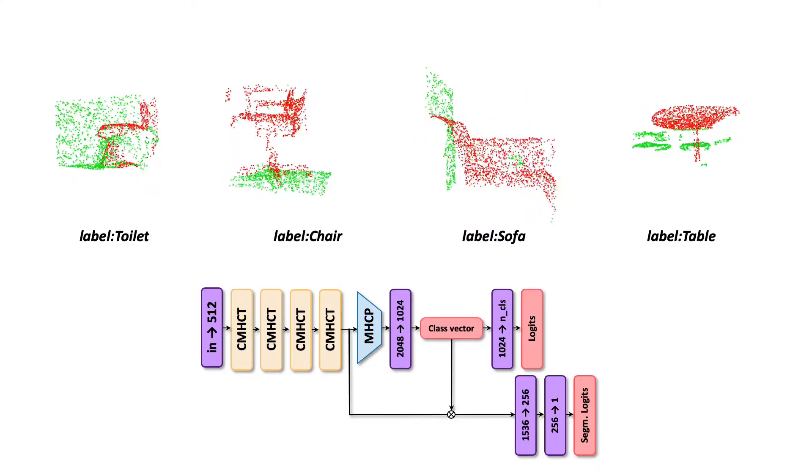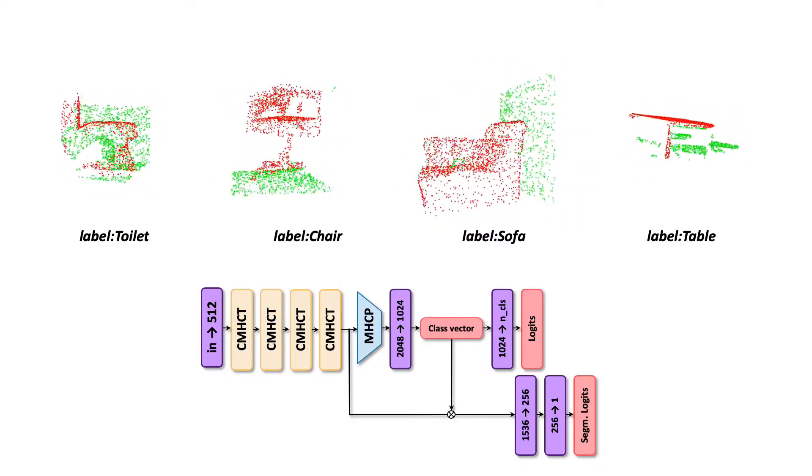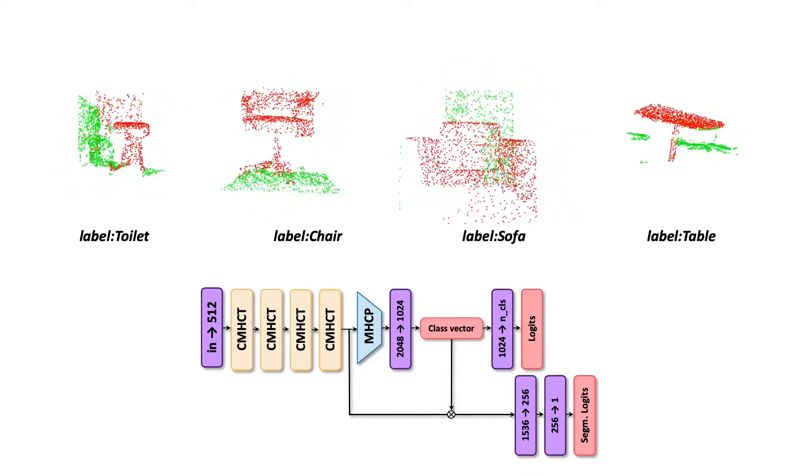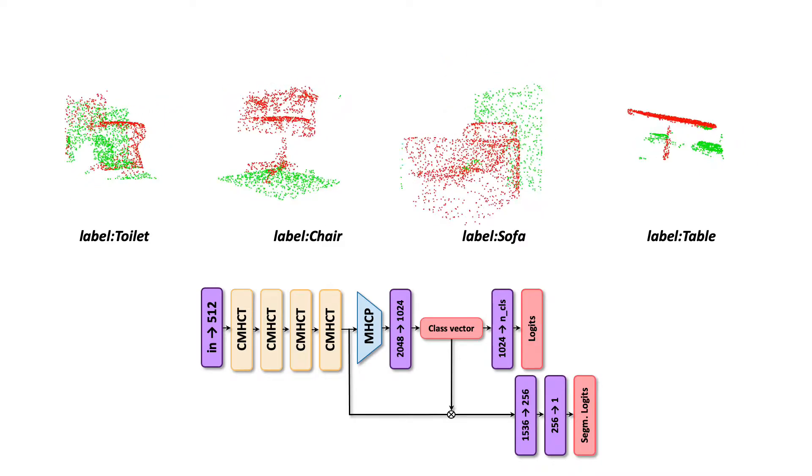Here we show results of the cloud transformer that takes an unlabeled point cloud and then segments the foreground and assigns the class label. The results are shown for four samples from the ScanObjectNN benchmark.